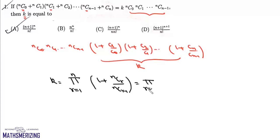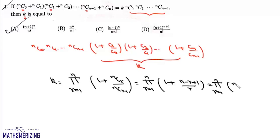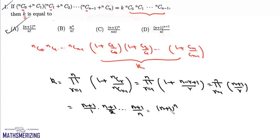We can write NCR upon NCR minus 1 as N minus R plus 1 upon R, which simplifies to N plus 1 upon R. Putting the value of R, it will be N plus 1 upon 1 into N plus 1 upon 2, up to N plus 1 upon N, which is N plus 1 to the power N upon factorial N. So the value of K is N plus 1 to the power N upon factorial N, and that's option A.